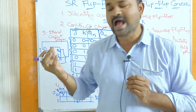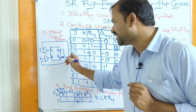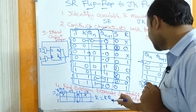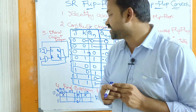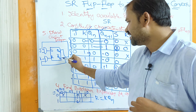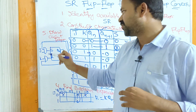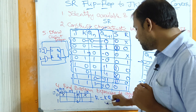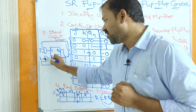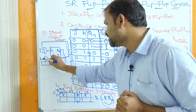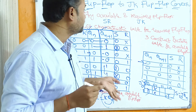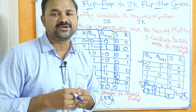The last step is to draw the circuit diagram. We take an SR flip-flop with inputs S and R and outputs QN and QN̄. Since S = J·QN̄, the S input receives from an AND gate with inputs J and QN̄. Since R = K·QN, the R input receives from an AND gate with inputs K and QN. This is the complete circuit diagram for converting an SR flip-flop into a JK flip-flop.